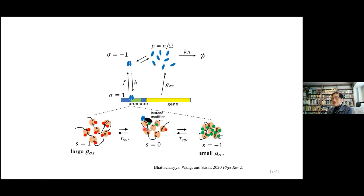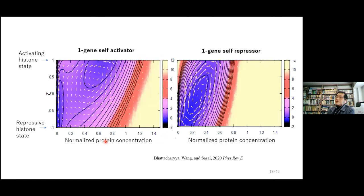There is feedback inside each individual gene locus due to interplay between transcription factor binding and histone modifications. Histone modification is a slow process — each histone would be modified on a timescale of several tens of minutes or so, but many nucleosomes may collectively modify over timescales of days or hours. So we can expect non-adiabatic effects of histone modifications.